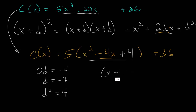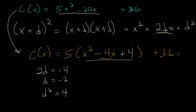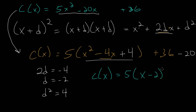We need to be careful because we can't just add 4 on the inside without changing the function. We have to also subtract the same amount. Since we're inside the factor of 5, we're really adding 5 times 4, or adding 20, which means we need to subtract 20 to balance it out. With all of that, we can rewrite: c of x is 5 multiplied by (x minus 2) squared, and then 36 minus 20, which is positive 16.